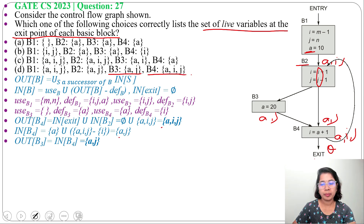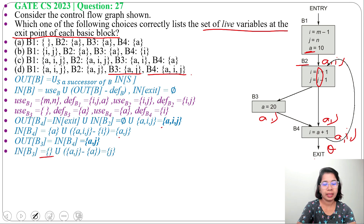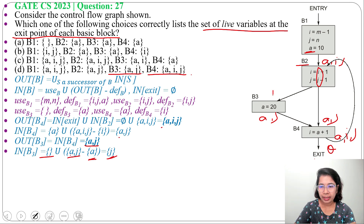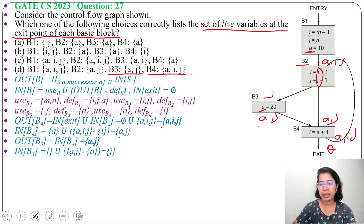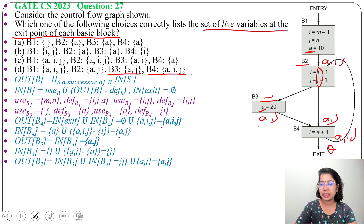Next, in(B3) equals use(B3) union (out(B3) minus def(B3)). Use(B3) is phi, out(B3) is {a, j}, def(B3) is {a}. So phi union ({a, j} minus {a}) = {j}. At entry of B3, just j is live; at exit, {a, j} are live — a is redefined here, so at exit a and j are live. Next, out(B2) equals in(B3) union in(B4) = {j} union {a, j} = {a, j}.